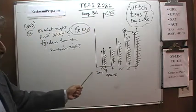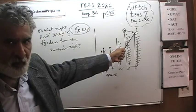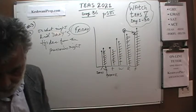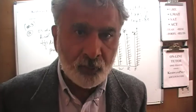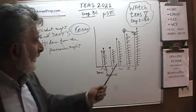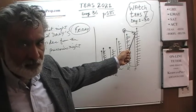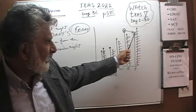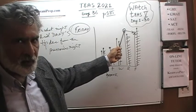We really don't have to worry about how much his tip was on that day. They're simply asking us on which night did his tip go down from the previous night. The answer is Friday — his tips went down from the previous night because on Friday he has less money, while on Thursday the line is higher.